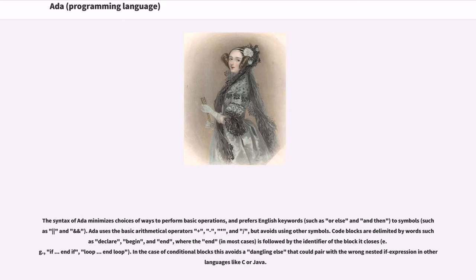The syntax of Ada minimizes choices of ways to perform basic operations and prefers English keywords, such as 'or else' and 'and then', to symbols such as vertical bar and ampersand. Ada uses the basic arithmetical operators plus, dash, and slash, but avoids using other symbols. Code blocks are delimited by words such as 'declare', 'begin', and 'end', where 'end' in most cases is followed by the identifier of the block it closes, for example, 'if'/'end if', 'loop'/'end loop'. In the case of conditional blocks, this avoids a dangling else that could pair with the wrong nested if expression in other languages like C or Java.